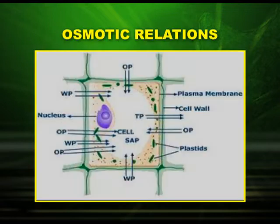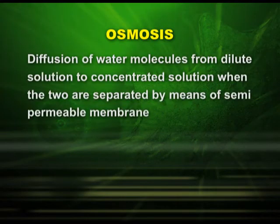Let us see the osmotic relations with the help of the following diagram. The diagram shows osmotic potential, turgor potential, water potential, and how the movement of water molecules takes place. Now let us learn about osmosis. It is the diffusion of water molecules from a dilute solution to a concentrated solution when the two are separated by a semipermeable membrane.